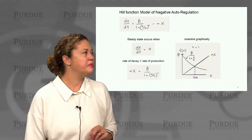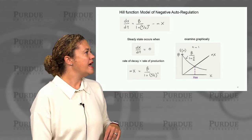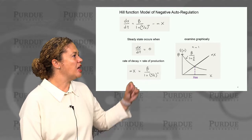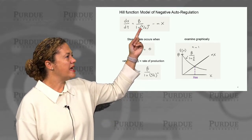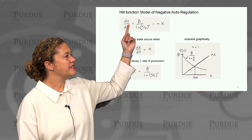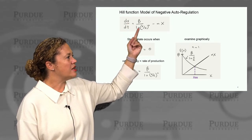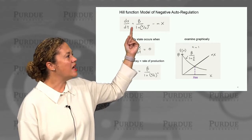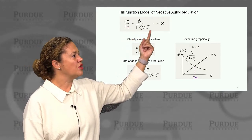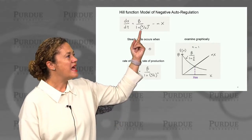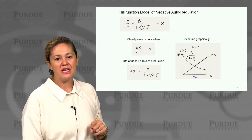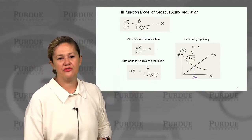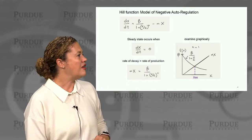So let's start with our familiar Hill function model of repression. Now because we're in negative auto regulation, previously we were looking at dy/dt, and our repression term had X repressing Y. Now our dx/dt is solely a function of X, and in our repressor term, X is now repressing its own expression. And again, we have our familiar decay term, minus alpha X.